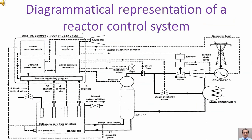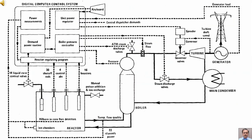Diagrammatical representation of a reactor control system. The central dispatcher demand signal is going into the unit power regulator. The generator load signal is also going into the unit power regulator. The unit power regulator output signal is going to the turbine governor.